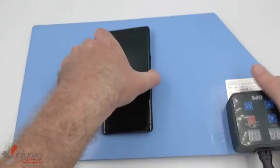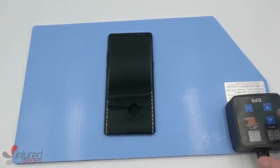We'll start by placing our device on our CPB heating pad at 75 degrees for anywhere from four to six minutes.